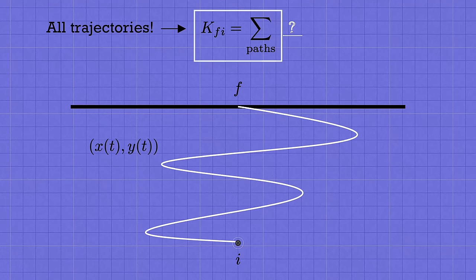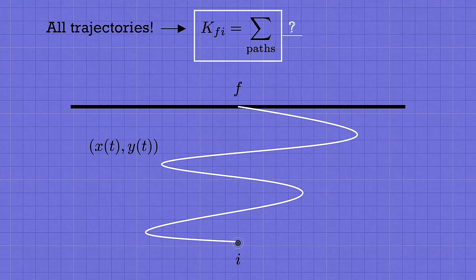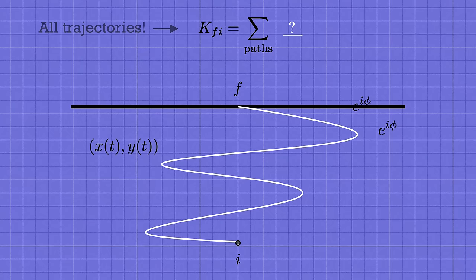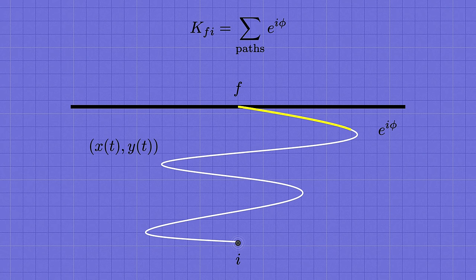But what weight are we supposed to add up for each path? Let's suppose, much like in our discussion of waves, that each trajectory contributes to the sum with a particular complex phase, e to the i phi. Where phi is some number that we assign to each path, which determines how it contributes to the total amplitude. This is the core idea of the quantum sum over paths. And it's pretty incredible compared to our usual experience.